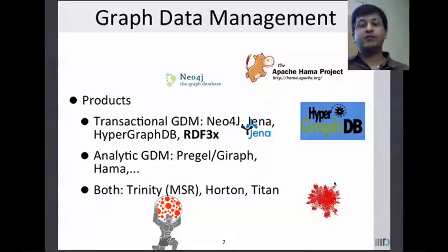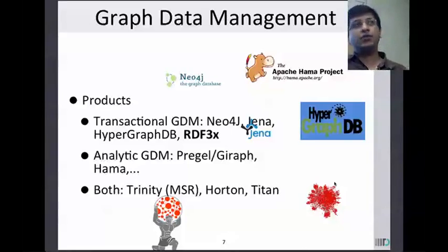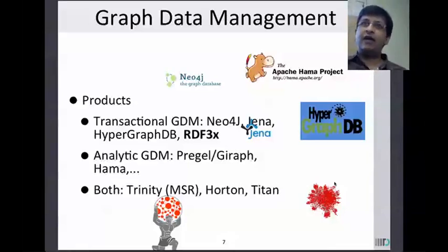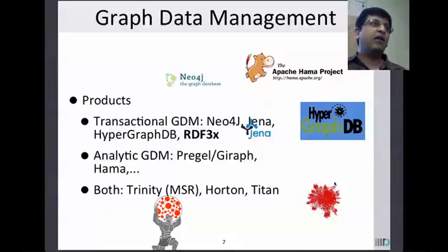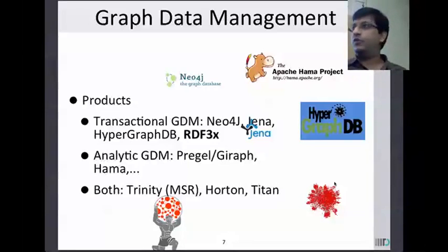RDF Triple X was done at the Max Planck Institute and it is perhaps the fastest RDF store I have ever seen. That is why it is called Triple Xpress. They have added transactional support, and what I am working on is to add analytic support on top of RDF Triple X — so they did the transactional side and we are adding the analytic side, including mining operations and recursive reasoning.